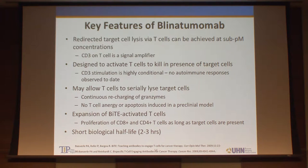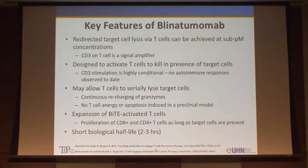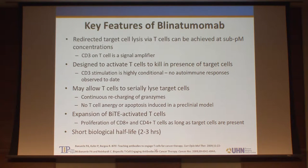Key features include impressive target cell lysis using T-cells at sub-picomolar concentrations. It's been designed to activate T-cells to kill in the presence of target cells, with no descriptions of autoimmunity up to this point. It may also allow T-cells to serially kill targets, giving them time to recharge granzymes. In pre-clinical models, T-cell anergy hasn't been demonstrated, though early signs of resistance may involve upregulation of PD-1 and PD-L1 ligands. The biologic half-life is short — only two to three hours — which has proven challenging in the clinic.